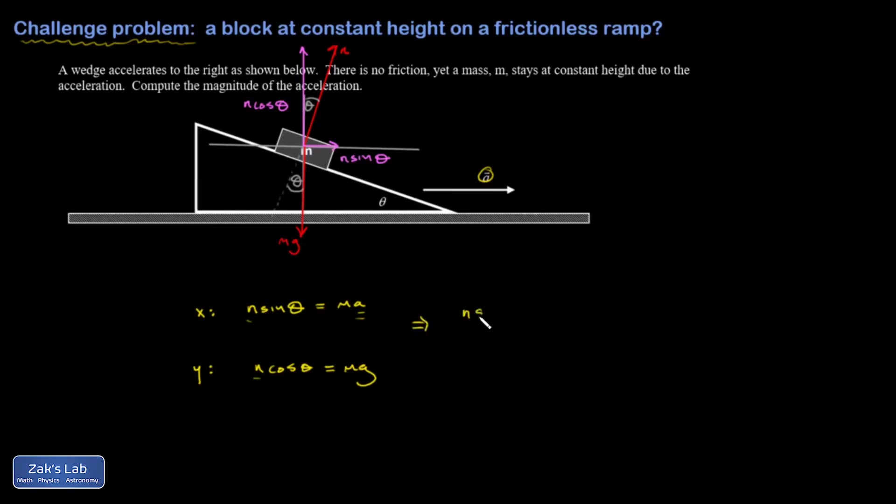So this gives me n sine theta over n cosine theta equals ma over mg. And the purpose of that was to cancel the normal force, because I'm not interested in it. And what I'm left with on the left-hand side is the tangent function. So the tangent of theta is equal to a over g.